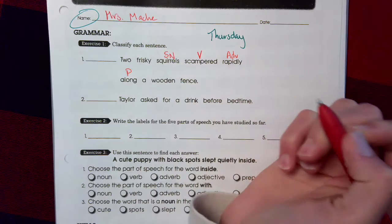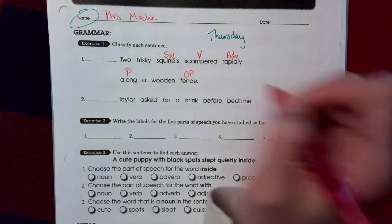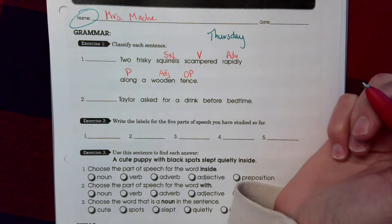Along what? Fence. Object of the preposition. What kind of fence? Wooden. Adjective.